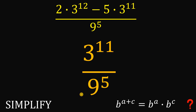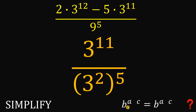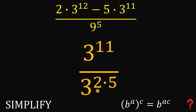Now for the denominator, since we want to simplify without a calculator, let's replace 9 with 3 raised to the power of 2, because 3 squared is 9. Using the law of exponents — when we have b raised to the power of a, raised to the power of c, this equals b raised to the power of a times c — the denominator becomes 3 raised to the power of 2 times 5, which is 3 raised to the power of 10.